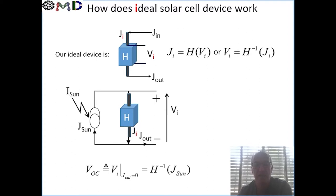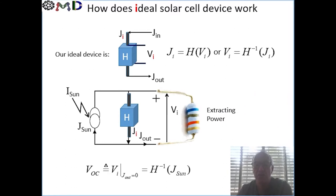And since, when we short circuit these two electrodes, the current flows only through those electrodes and not through the device, we can say that we can replace the Sun current with the short circuit current. And of course, if we want to extract some power, then there has to be a load brought into the picture.